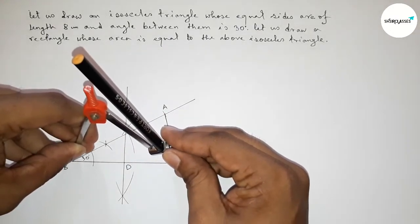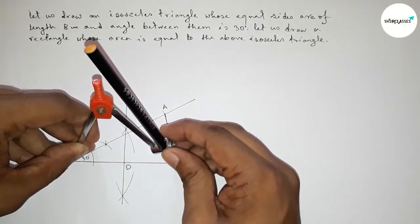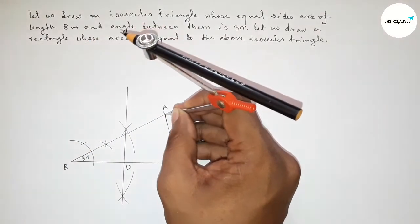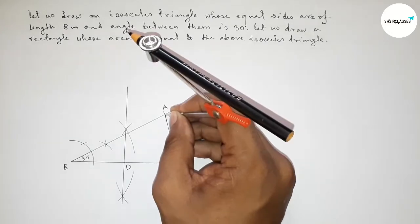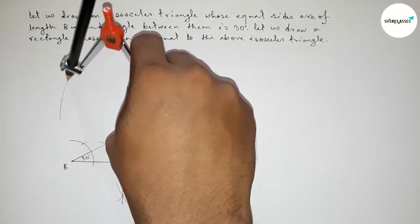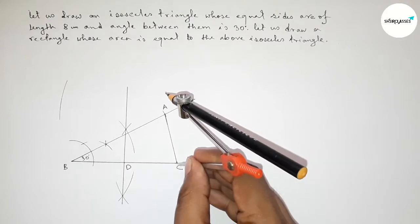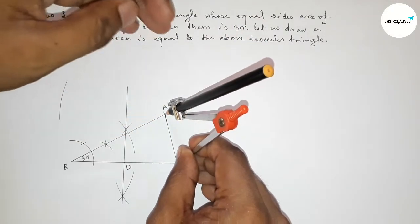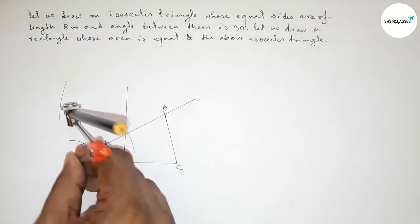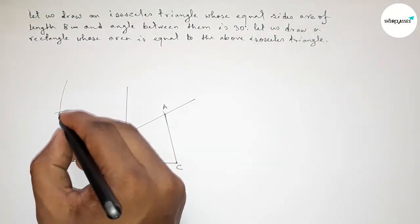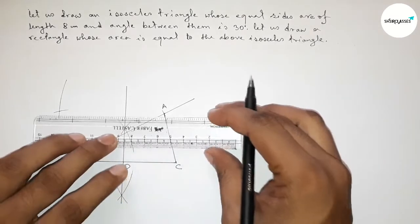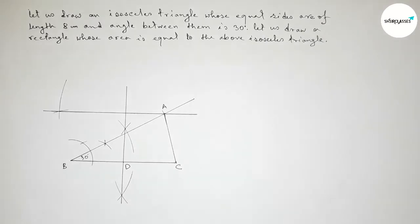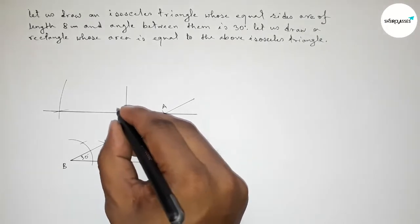Next taking length BC equal to 8 centimeters again by using compass, putting the compass on point A and drawing an arc. Then taking length AC by using compass and putting the compass here and cutting here. Both curves intersect at a point. Joining this line, which is parallel to BC, and taking point E here.